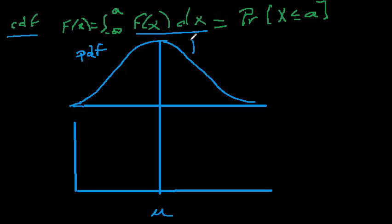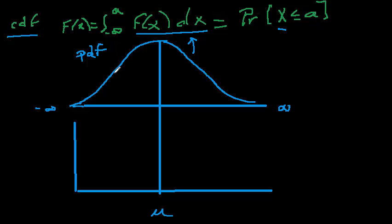This is a graph of the PDF, and to get the CDF we integrate that function. If we integrated from negative infinity to positive infinity, that would integrate to 1 — the total probability is 1. If we want to find the probability of a random variable X being less than some value A, then we find the area under the curve to the left of A. That gives us the probability that X is less than or equal to A.